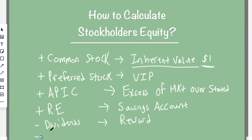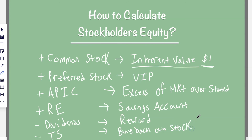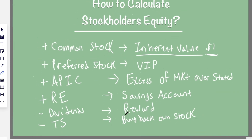And lastly, you have something called treasury stock, which is basically when you buy back your own stock. So you gave stock out to the public, and now for certain reasons you buy it back. To summarize: common stock is added, preferred stock is added, APIC is added, retained earnings is added, dividends are subtracted, and treasury stock is subtracted from equity.